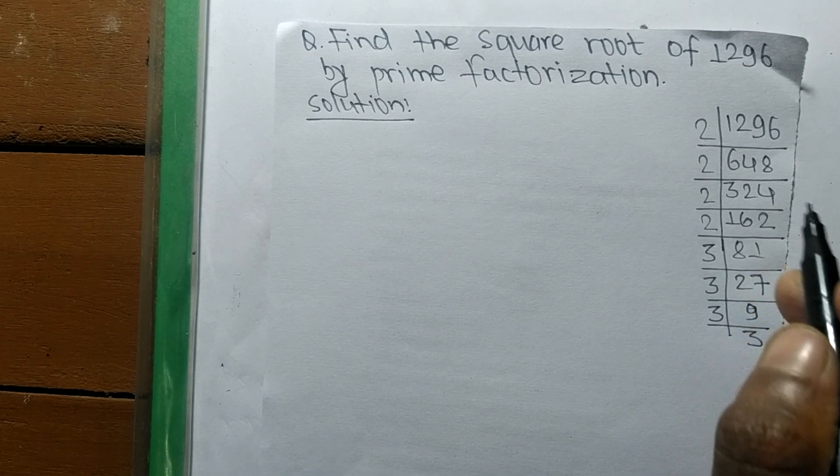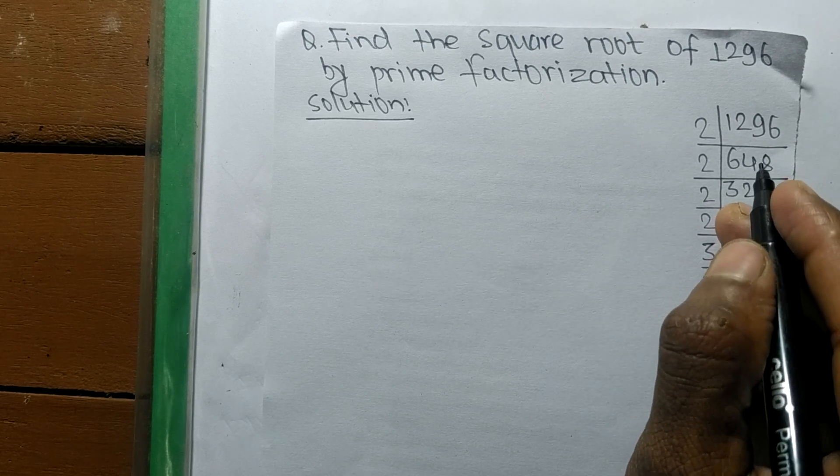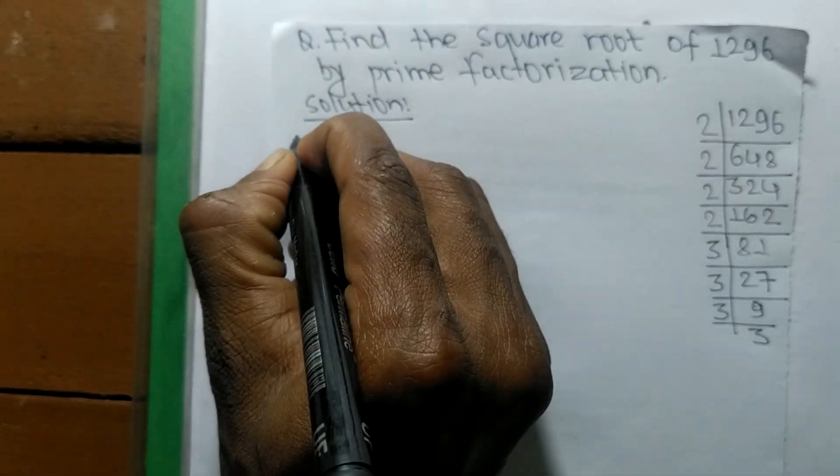So we have the prime factors of 1296. Now we find its square root.